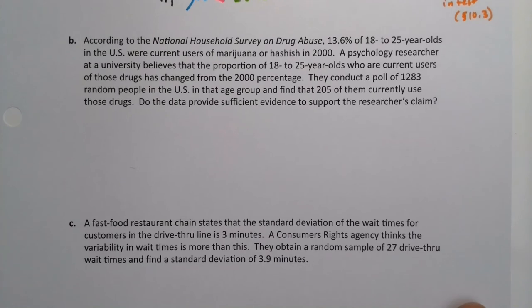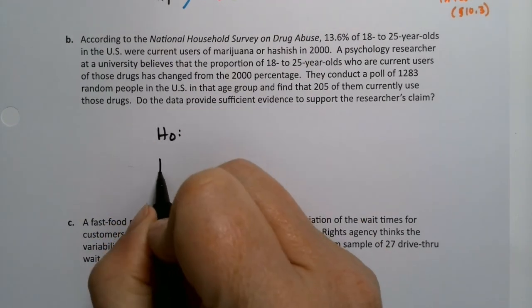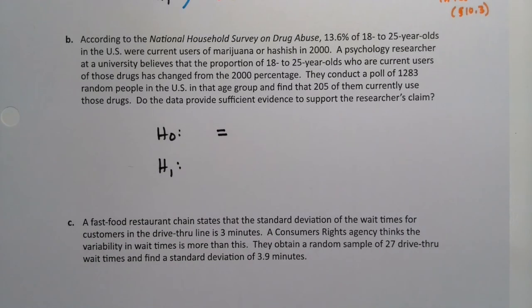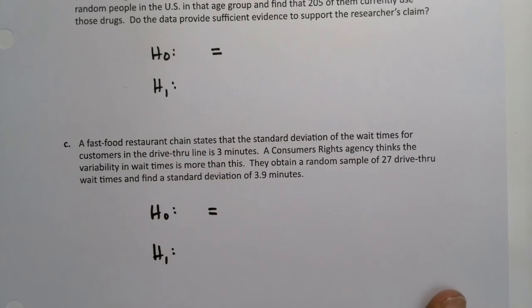All right. What about letter B? According to a national household survey on drug abuse, 13.6% of 18 to 25-year-olds in the U.S. were current marijuana users, or current users of marijuana or hashish in 2000. A psychology researcher at a university believes that the proportion of 18 to 25-year-olds who are current users of those drugs has changed from the 2000 percentage. They conduct a poll of 1,283 random people in the U.S. in that age group and find that 205 of them are currently using those drugs. Do the data provide sufficient evidence to support the researcher's claim? All right. Well, as always, you begin with your H0 and your H1, your null hypothesis and your alternative hypothesis. The null hypothesis will always have an equal sign in it. As a matter of fact, I could do that right now for part C, because I know that this will always be this way, right?